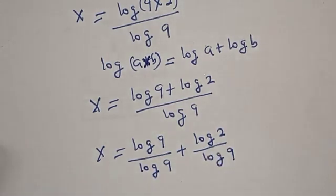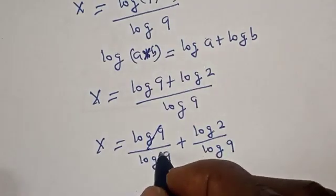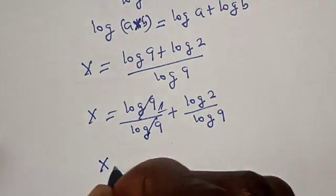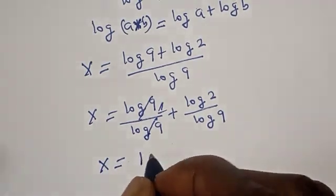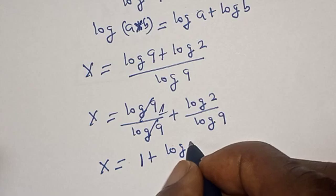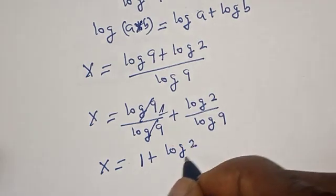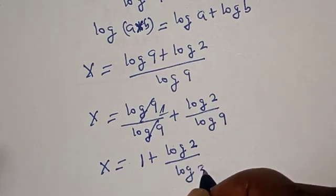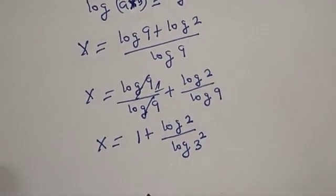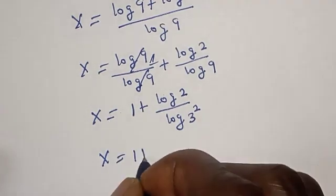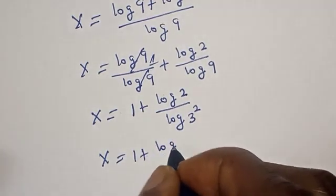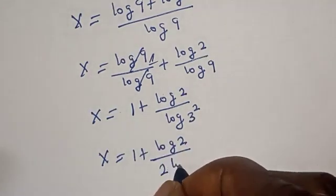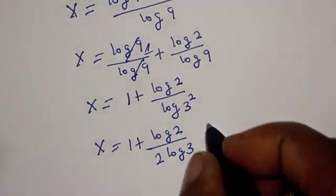This one will cancel. x is equal to 1 plus log 2 over log 9, which can be rewritten as log 3 squared. Then x is equal to 1 plus log 2 over 2 log 3.